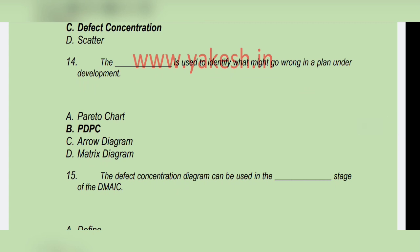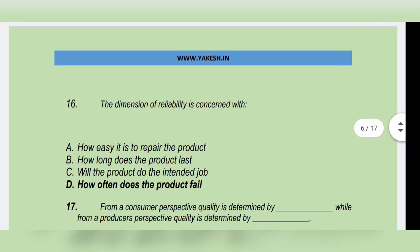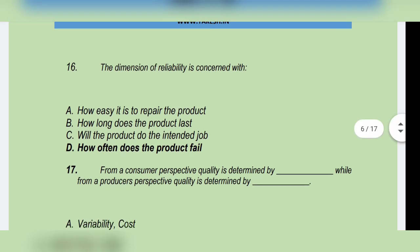Next question: PDPC is used to identify what might go wrong in a plan under development. Option B: PDPC is the correct answer. Next question: The defect concentration diagram can be used in the — Option C: Analyze stage of DMAIC. The dimension of reliability is concerned with — Option D: How often does the product fail?